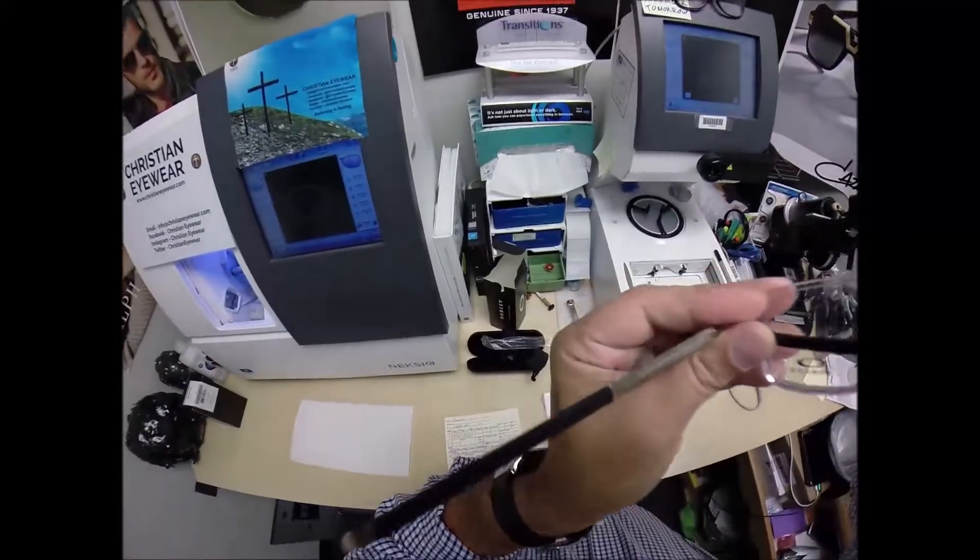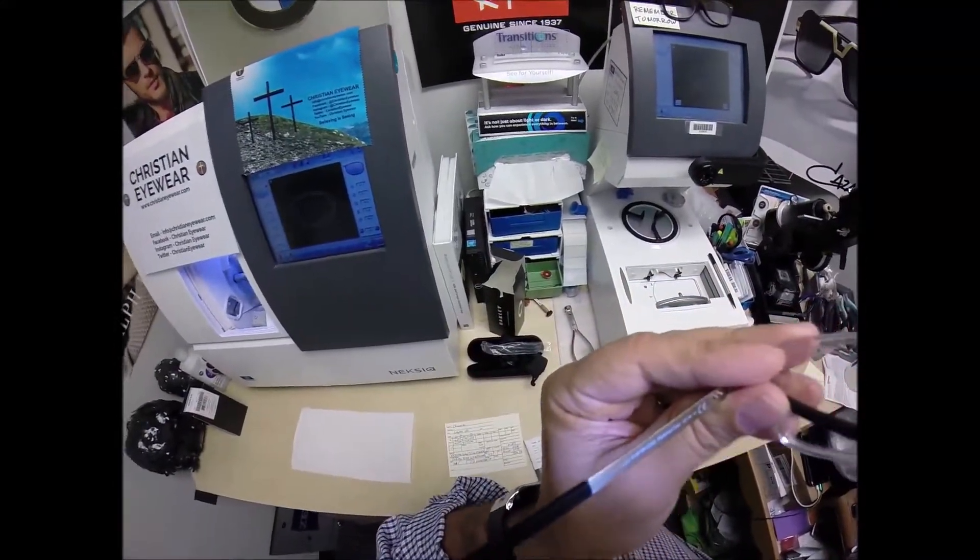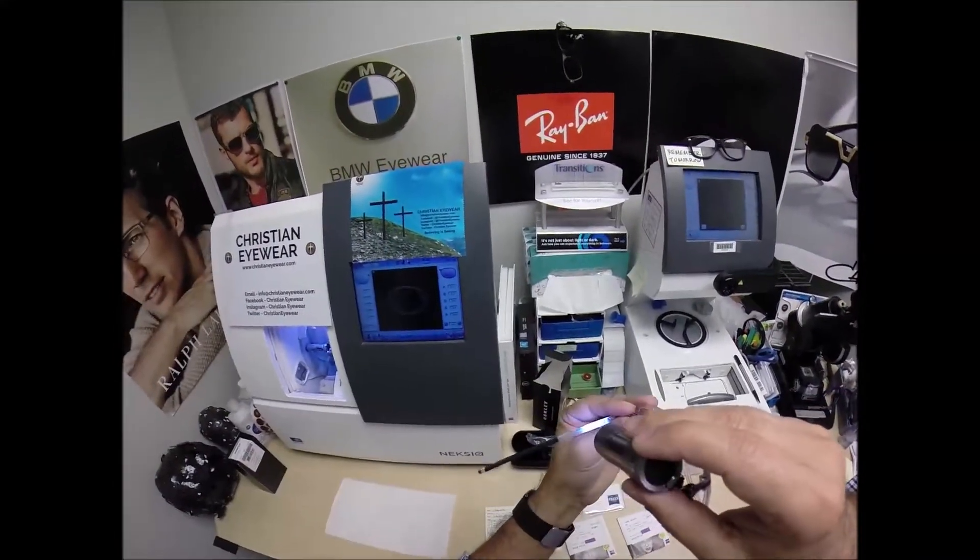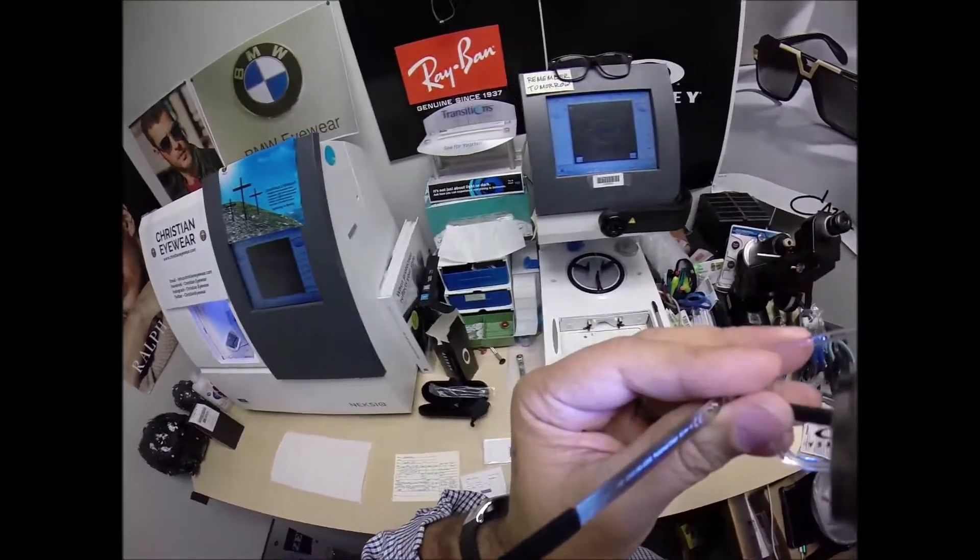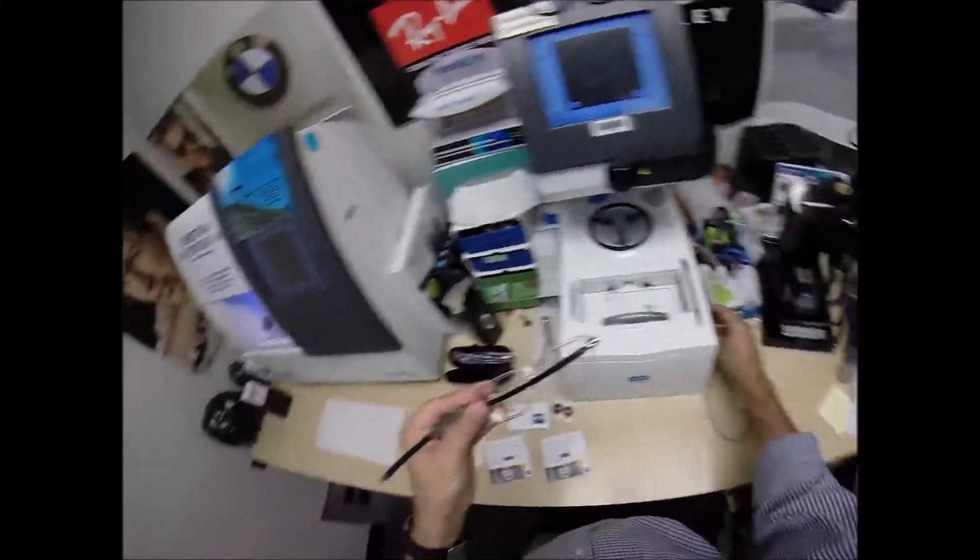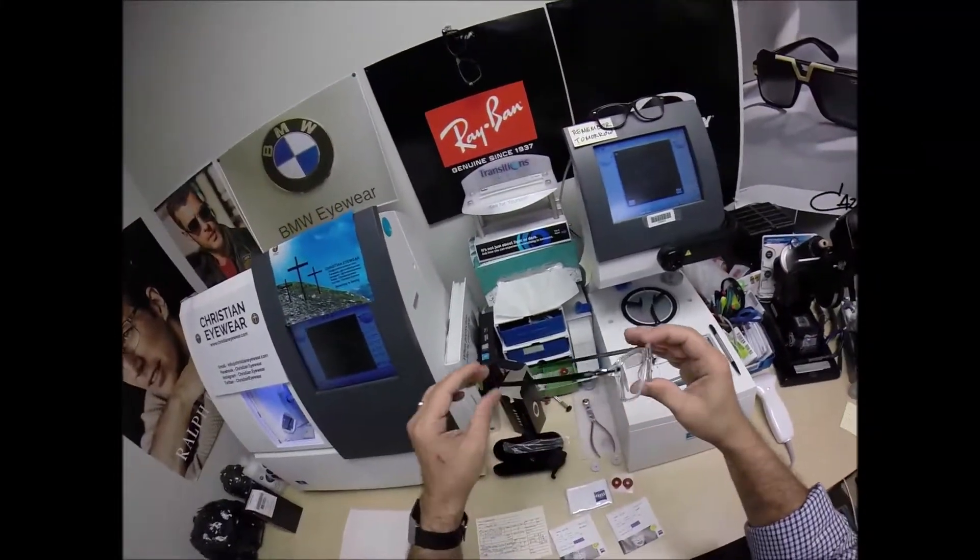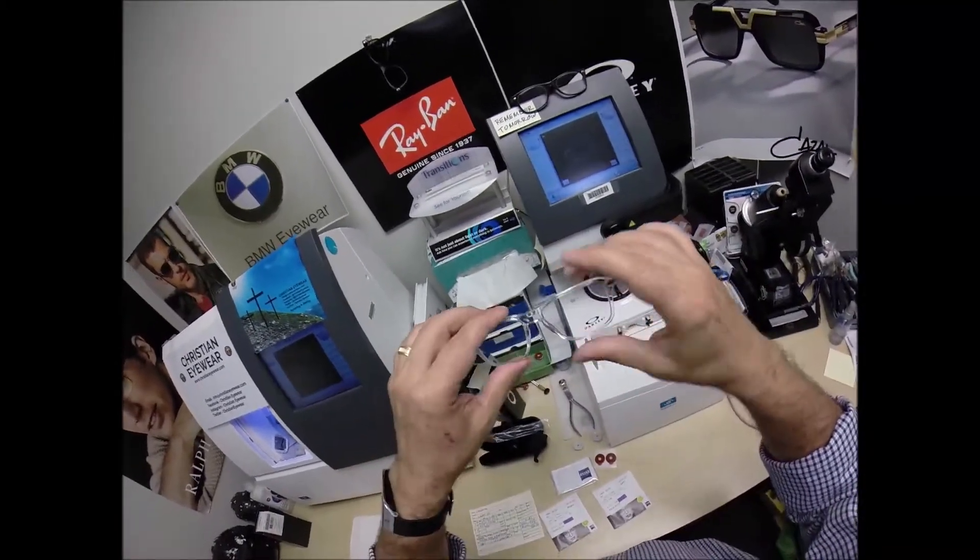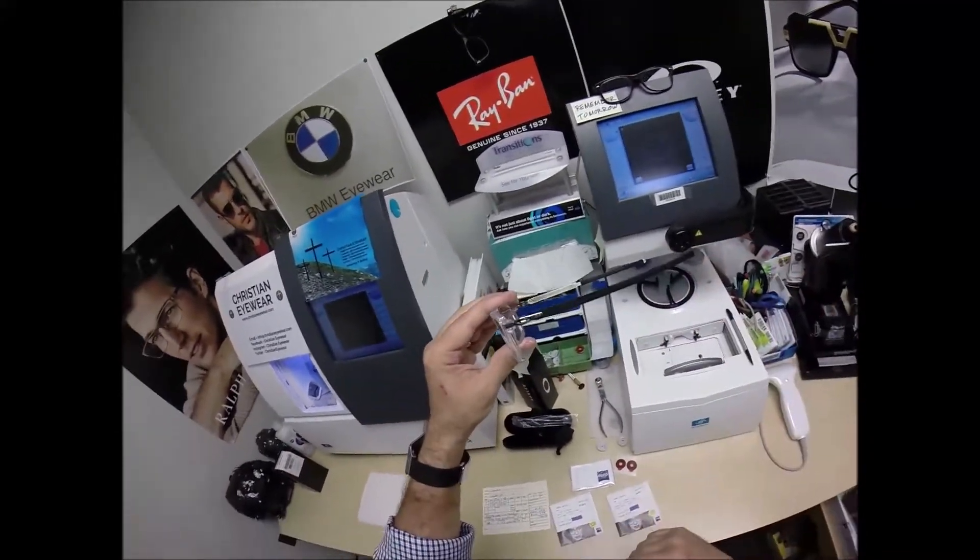It is the Oakley 8166, color 02, size 52, and the polish clear. Of course, I'm going to take out the original demo. This polish clear crystal front with the black temples.